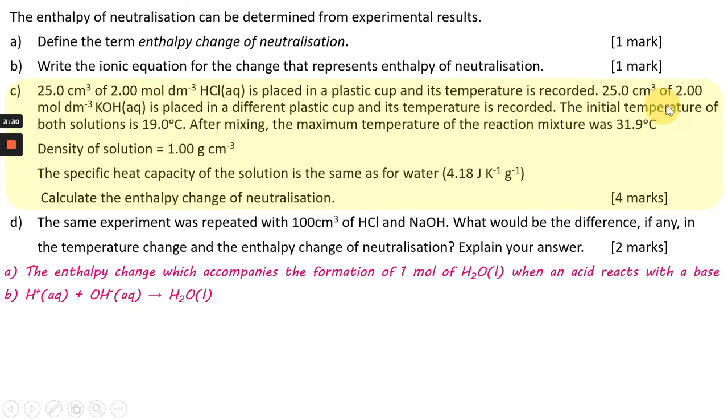The initial temperature is 19.0 degrees, and after we mix them together so that they can react, the maximum temperature of the reaction mixture ended up as 31.9 degrees C. The density of the solution is one gram per centimeter cubed, so the combined volume, 50 cm3, means the mass is going to be 50 grams.